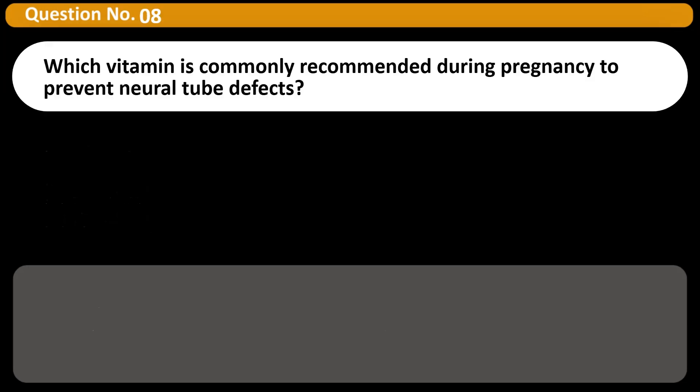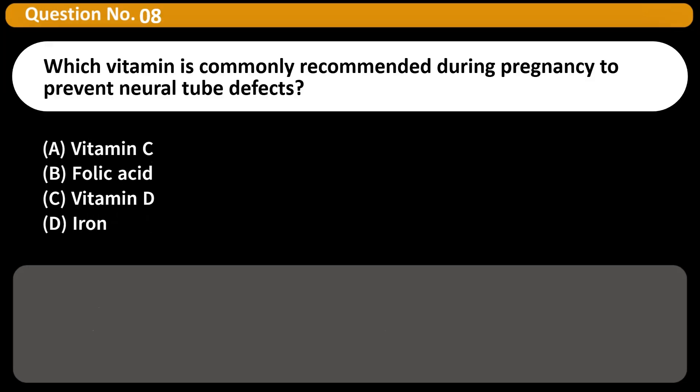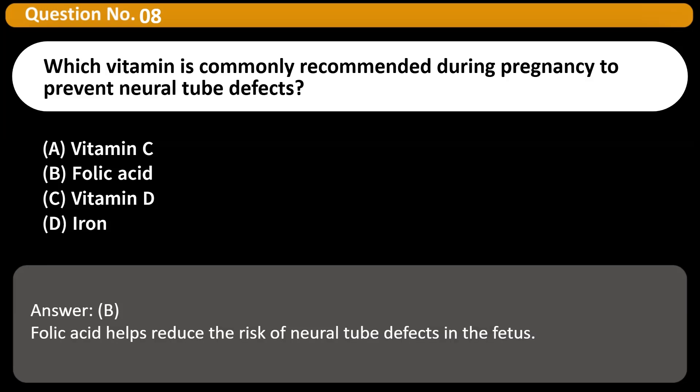Which vitamin is commonly recommended during pregnancy to prevent neural tube defects? A. Vitamin C. B. Folic acid. C. Vitamin D. D. Iron. Answer: B. Folic acid helps reduce the risk of neural tube defects in the fetus.